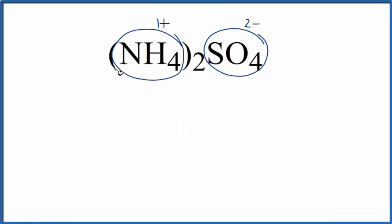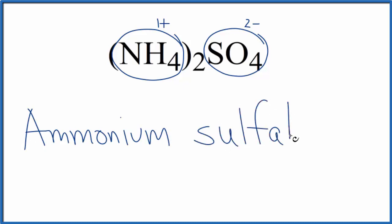So let's write the name. We said we had ammonium, NH4, and then that SO4 2-, that's the sulfate ion. And that's really all there is to naming this compound, recognizing the ammonium ion and the sulfate ion.